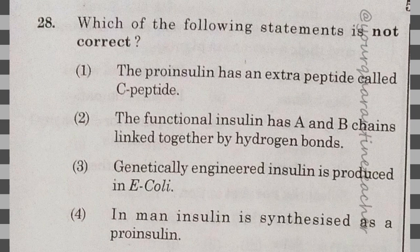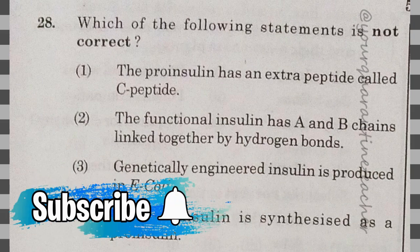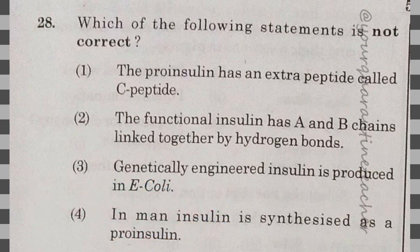28th question: which of the following statement is not correct? The answer is option 2 — the functional insulin has A and B chain linked together by hydrogen bond — it should be a disulfide bond. That is the wrong statement.